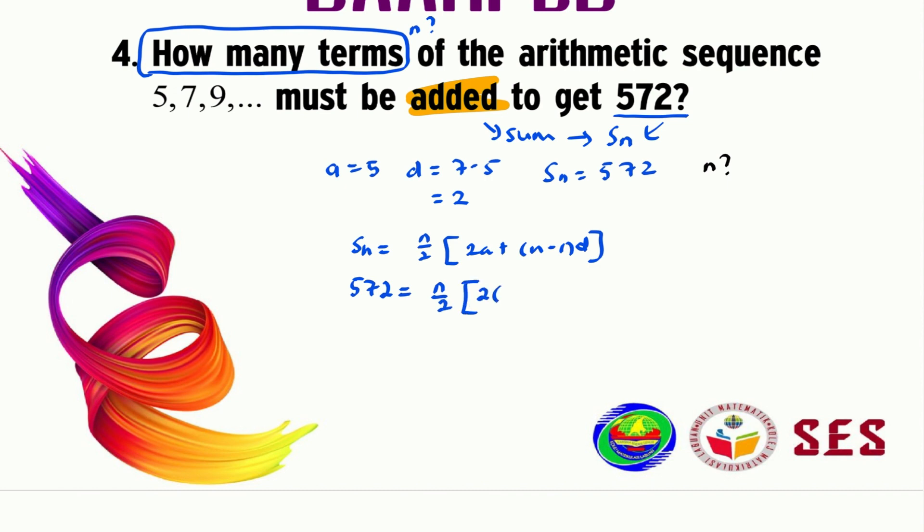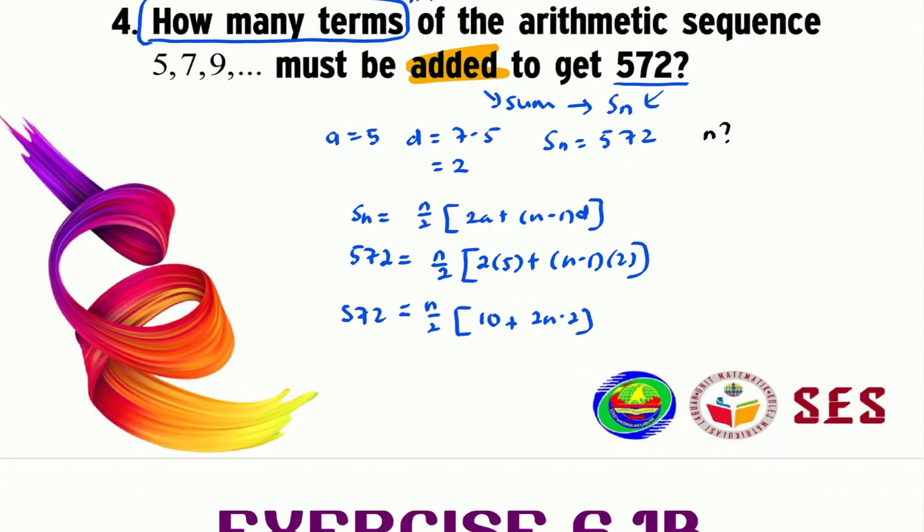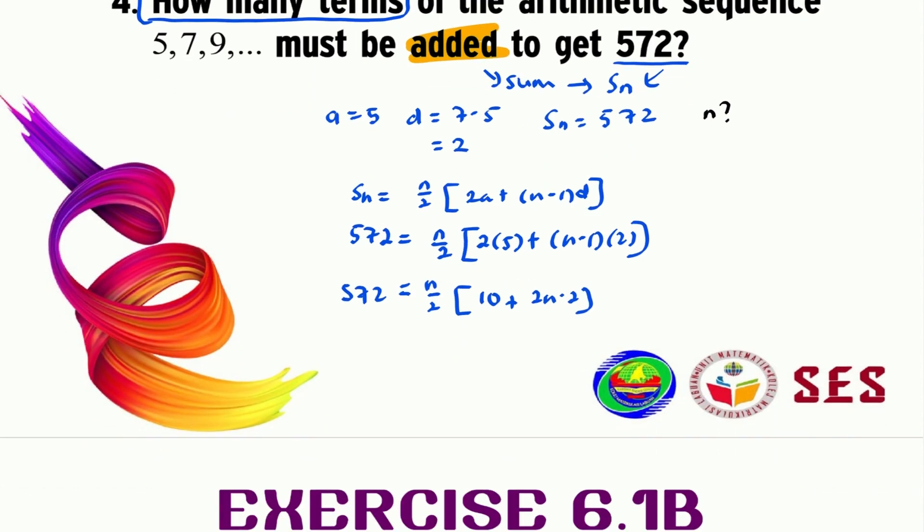So we have 2 times 5 here, plus n minus 1, d is equals to 2. When we try to simplify inside the bracket, we should have 10 plus 2n minus 2. This 572 is still there, so we will simplify again inside the bracket.